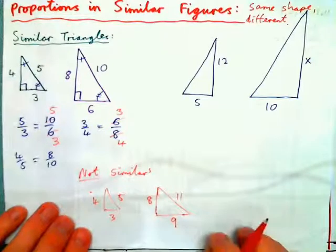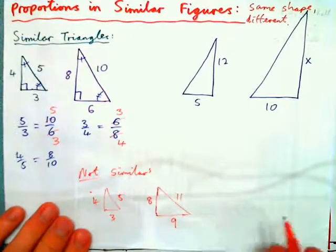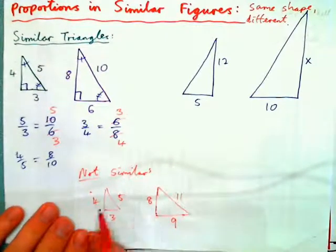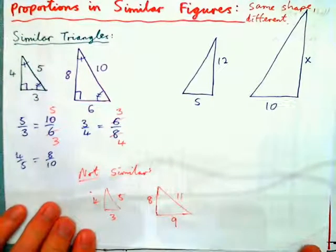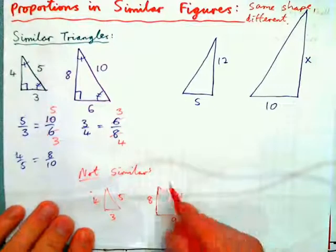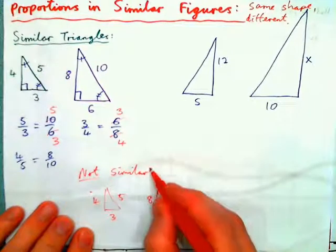...and these are just not the same shape at all. You cannot form proportions if they're not the same shape. Not similar just means not the same shape.